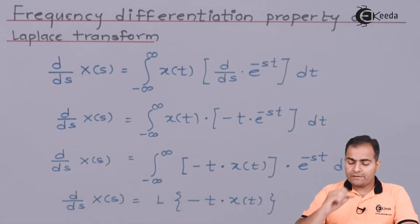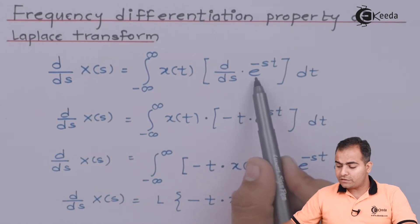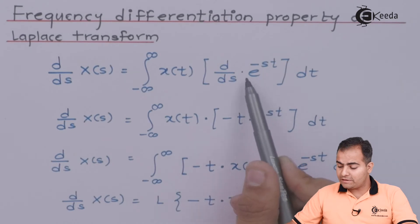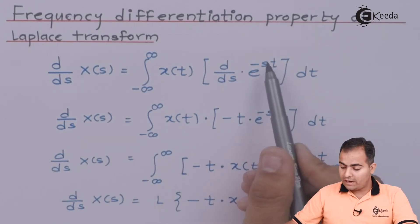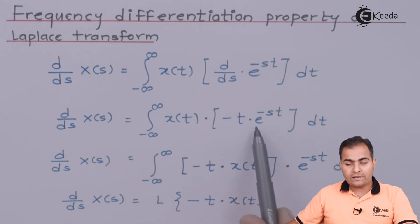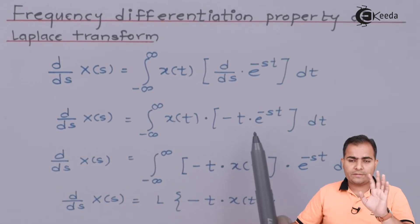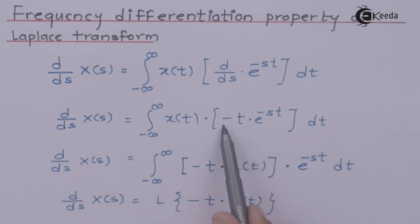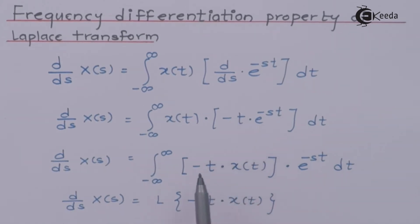So if I want to differentiate e to the power minus ST with respect to S, then minus T is the constant part and that will be multiplied with e to the power minus ST. That is the differentiation of e to the power minus ST with respect to S. Now I am going to multiply this minus T with X(T) and consider the whole thing as a single input.